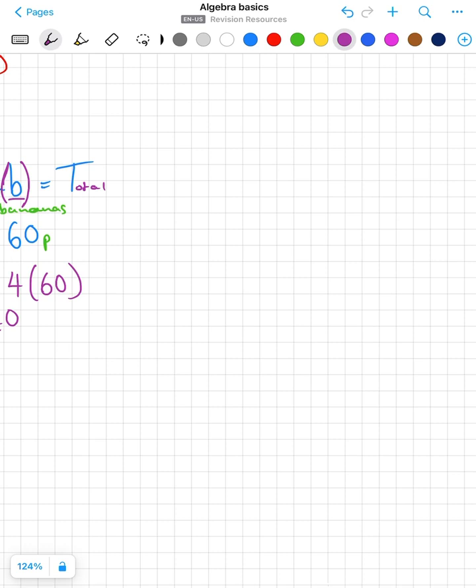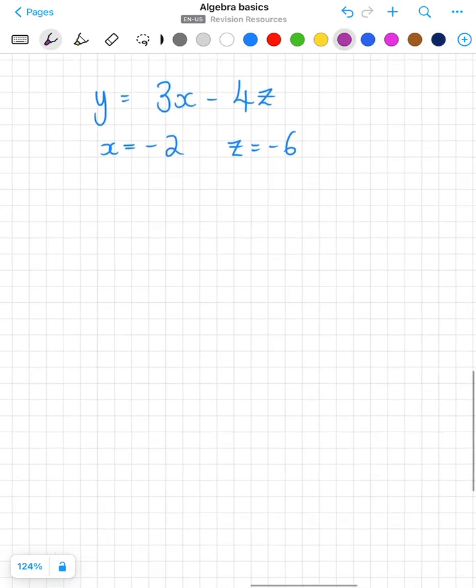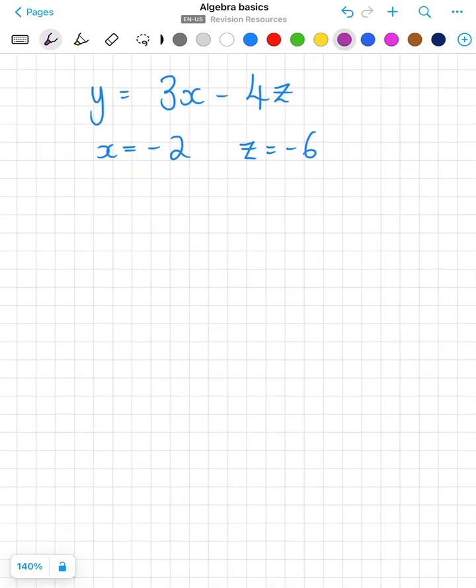Let's try again, y equals 3x minus 4z and let's say x equals minus 2 when z equals minus 6. So we're just going to put in some negative numbers now just to see how well we can follow that substitution.